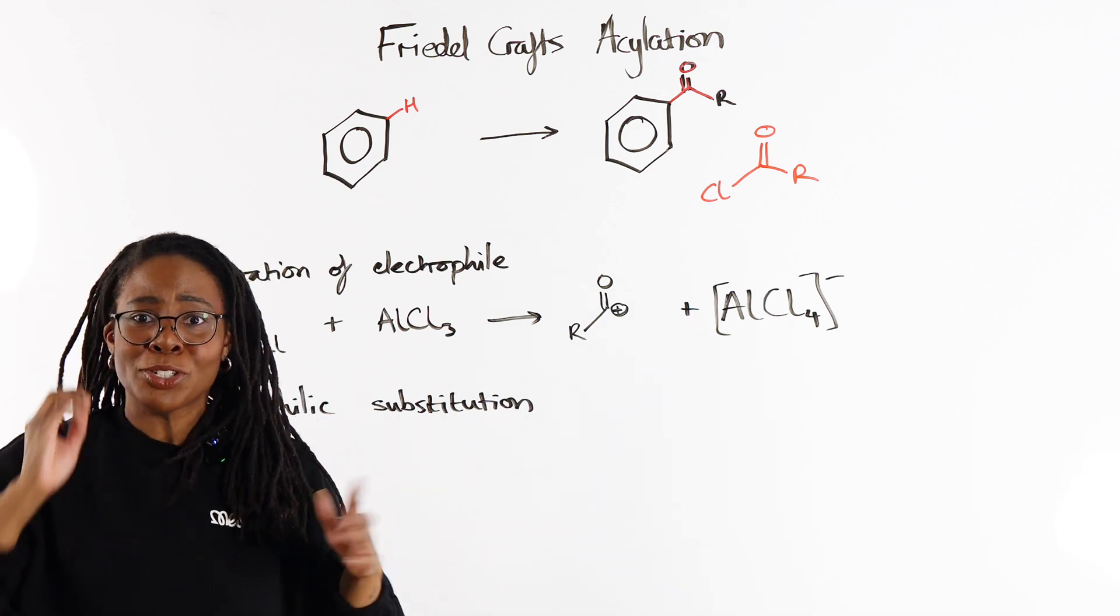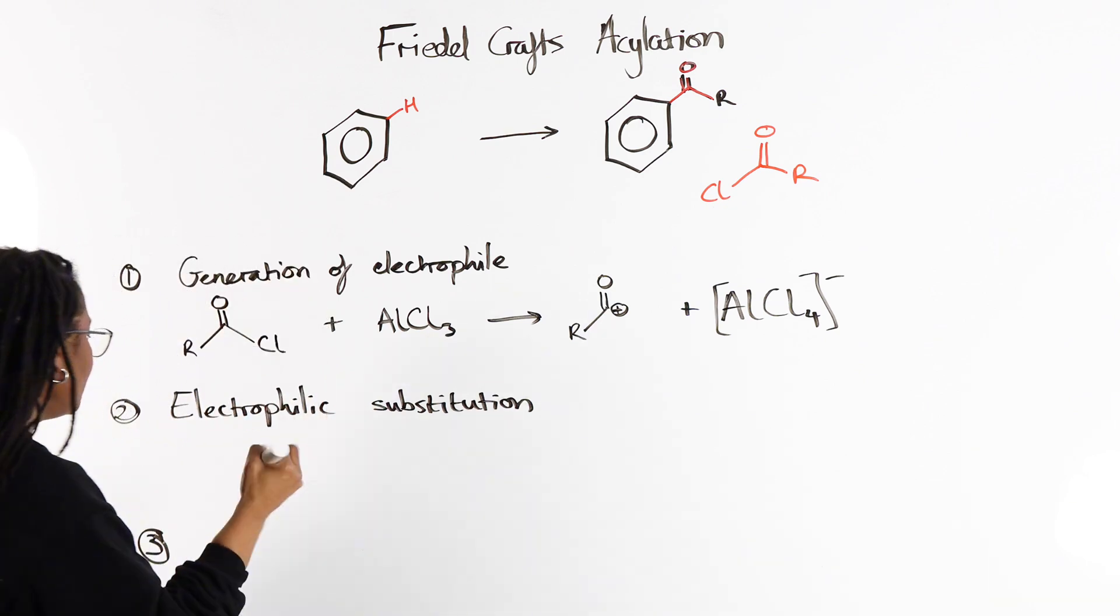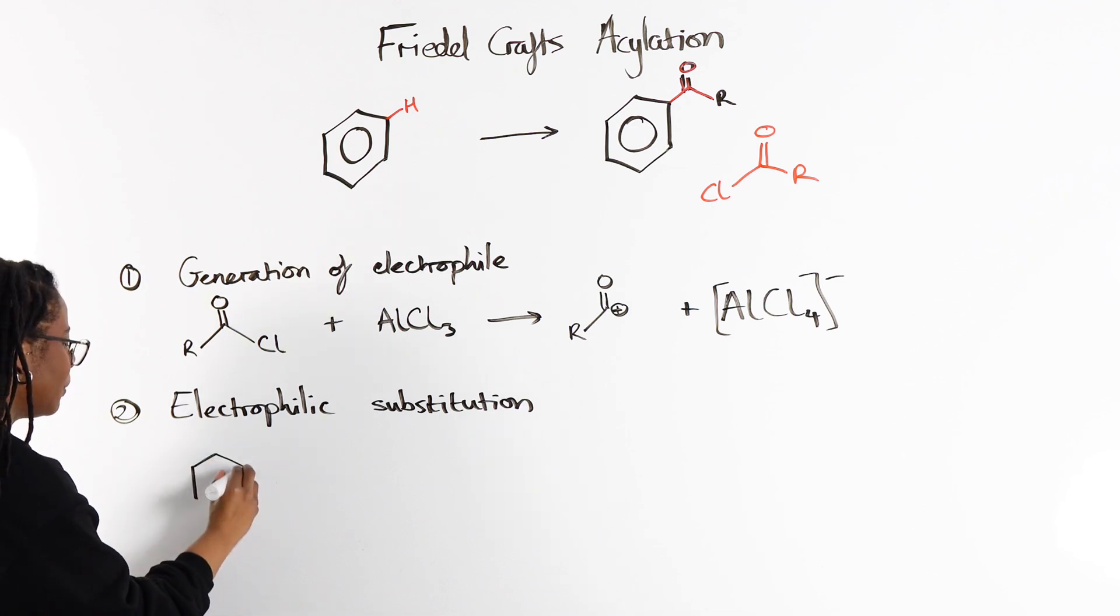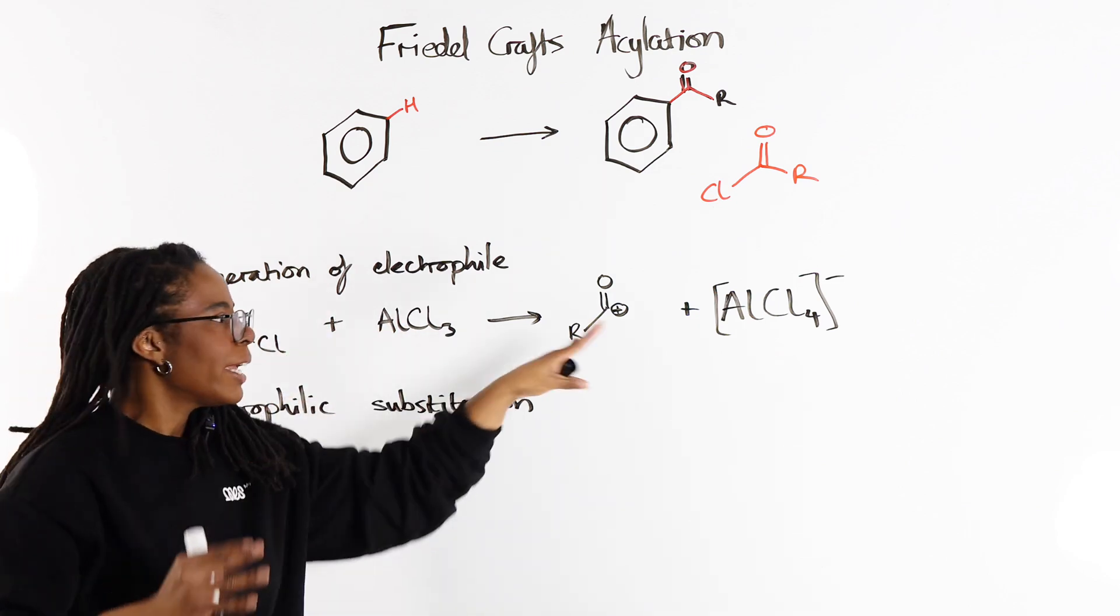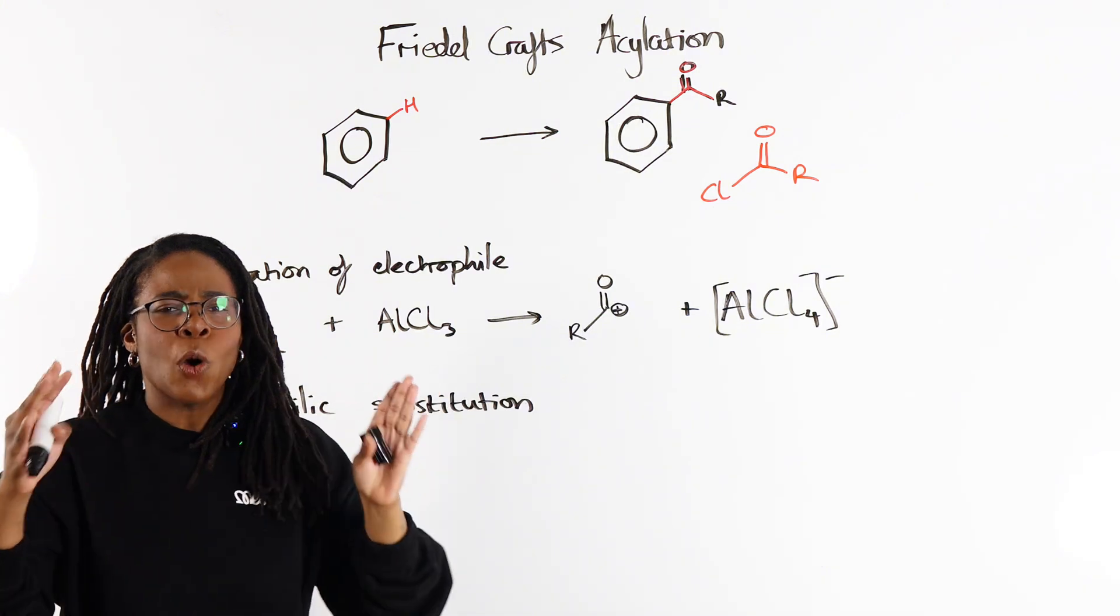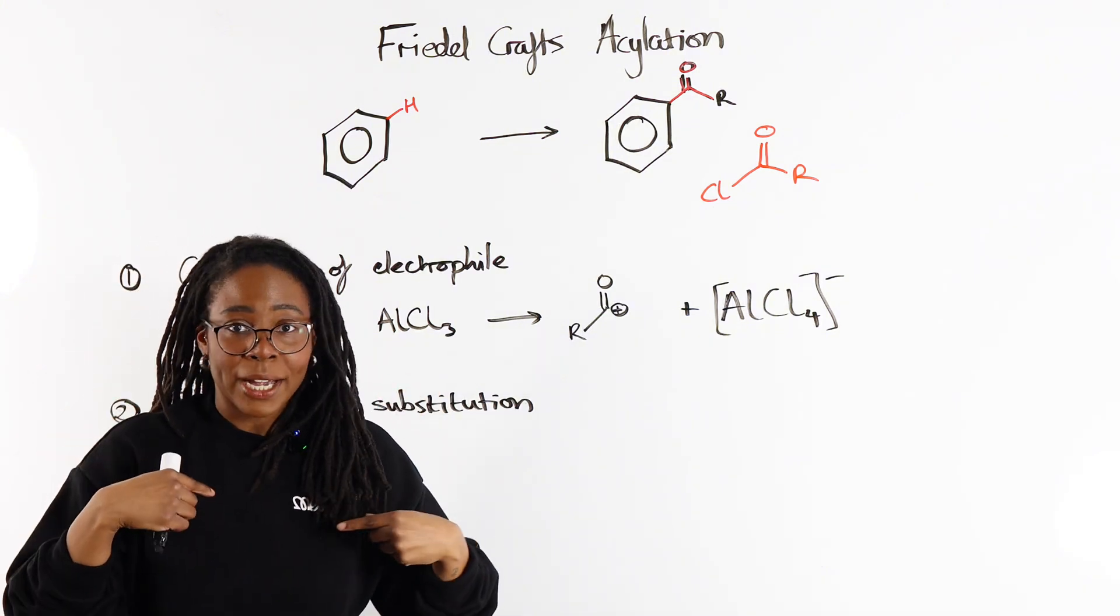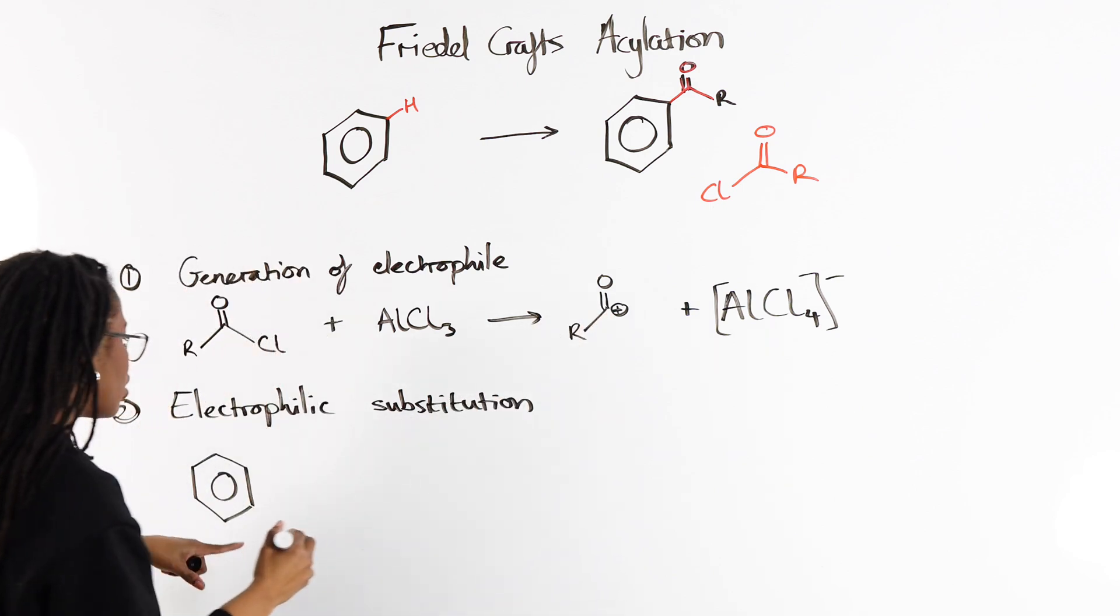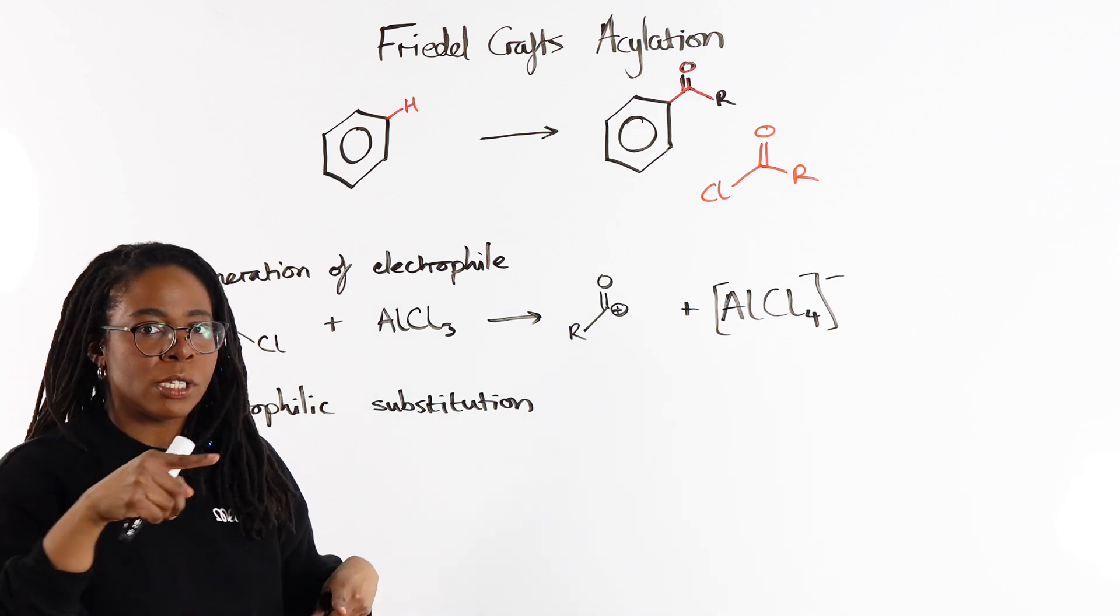Hopefully you can do this along with me, or maybe you've already done it and now you just want to check your answer. So we start with our benzene ring. Now, the trickiest part when it comes to this mechanism is positioning our electrophile in a way that's going to make it easy for ourselves.